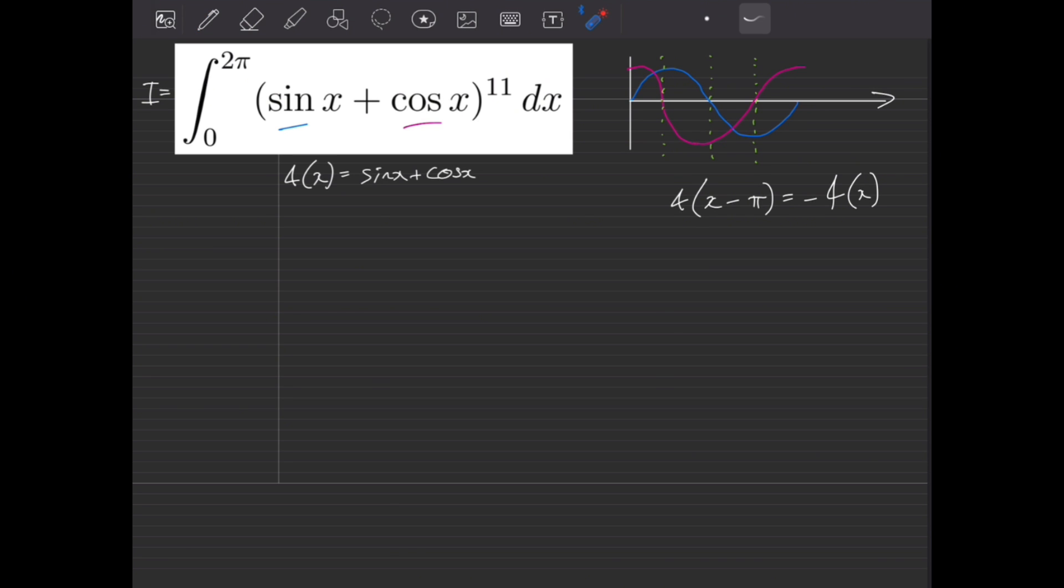So now if we think about the integral we need to evaluate, if we split that at pi, now I have one integral from 0 to pi of f of x to the power of 11, plus another integral with all the same stuff, f of x to the power of 11 dx, but now going from pi to 2 pi.